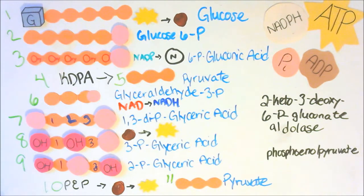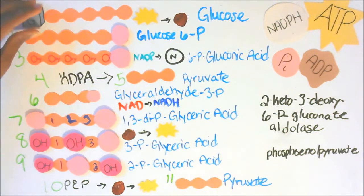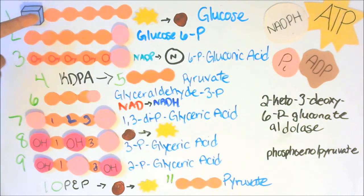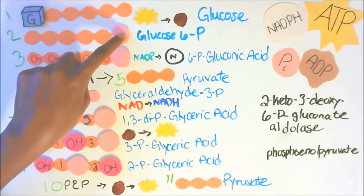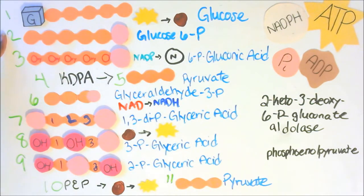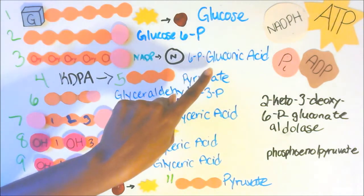This is the study portion of the video. There are 11 molecules and we're going to go over those first, then we'll go over the reactions, and then the whole thing. The orange things are molecules. For example, molecule one is glucose, which is a 6-carbon molecule. Our second molecule is glucose 6-phosphate, with the phosphate on the 6-carbon. Our third molecule is 6P gluconic acid.